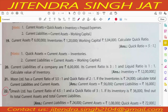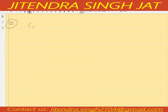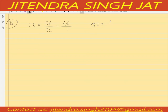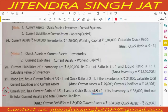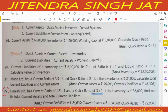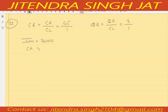Question number 22. Umesh Limited has a current ratio of 4.5 is to 1, meaning current assets upon current liability equals 4.5. Quick ratio is 3 is to 1, meaning quick assets upon current liability equals 3 upon 1. If the inventory is 36,000, calculate current assets and current liabilities. This is a similar question to the previous one.